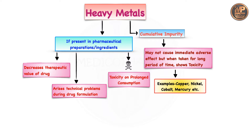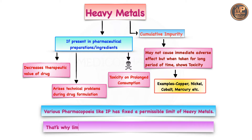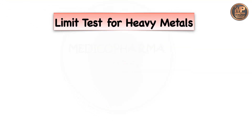Because of these various problems we try to exclude heavy metal impurities from pharmaceutical preparations or ingredients. But practically it is difficult to exclude them completely. So various pharmacopoeias and monographs have given a permissible limit. If the impurity is within that limit it is accepted; beyond that it is excluded. To check this, we carry out the limit test.